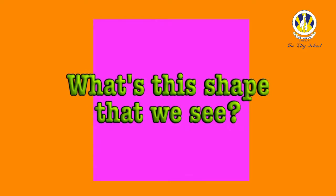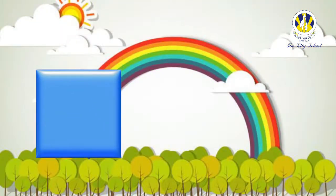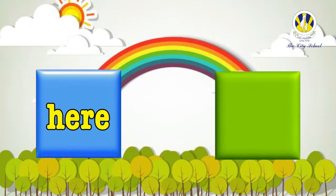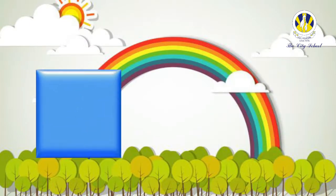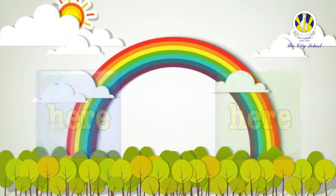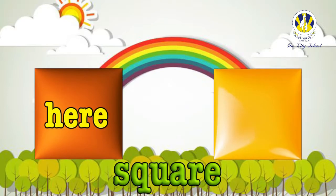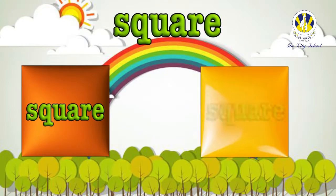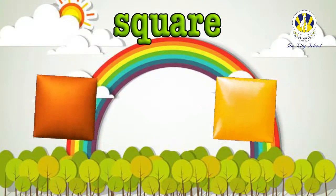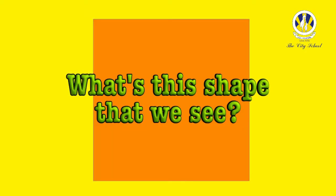What's the shape that we see? Do you know it? I'm a square, I'm a square, over here, over there! I'm a square, I'm a square, over here, over there! We see shapes every day. I see a new shape today. What's the shape that we see? Do we know its name?